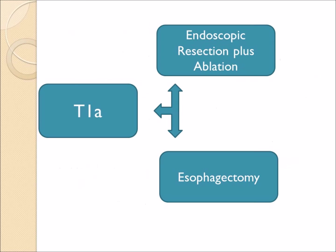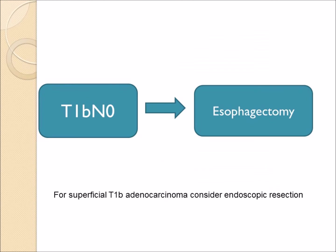If the tumor is superficial but a little deeper, such as T1A, endoscopic resection may still be the way to go. Even for T1B patients with adenocarcinoma, endoscopic resection may be an option, but for squamous cancer from this stage onward it is necessary to perform an esophagectomy and remove the esophagus.